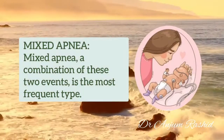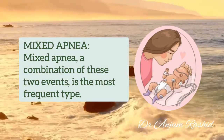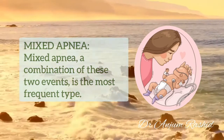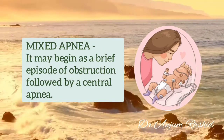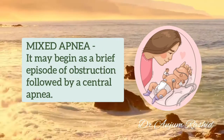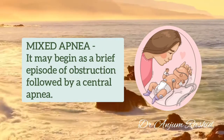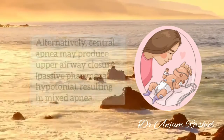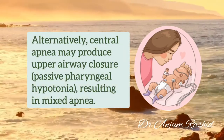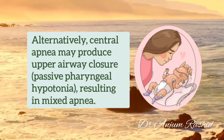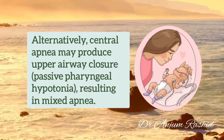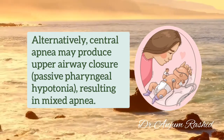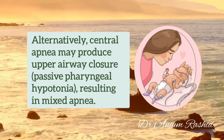The third type is Mixed Apnea. It is a combination of Central and Obstructive Apnea. It may begin as a brief episode of obstruction followed by Central Apnea. Alternatively, Central Apnea may produce upper airway closure — passive pharyngeal hypotonia — resulting in Mixed Apnea.